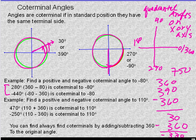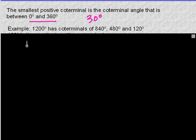Another concept: the smallest positive coterminal. This is the coterminal between 0 and 360. Each angle will have one between 0 and 360 — it might not be the original angle. For 390 degrees, subtract 360 to get 30, which is the smallest positive coterminal. For 30 degrees, it is already the smallest positive coterminal. For 1200: subtract 360 to get 840, then 480, then 120 — and subtracting again gives a negative, so 120 is the smallest positive coterminal.